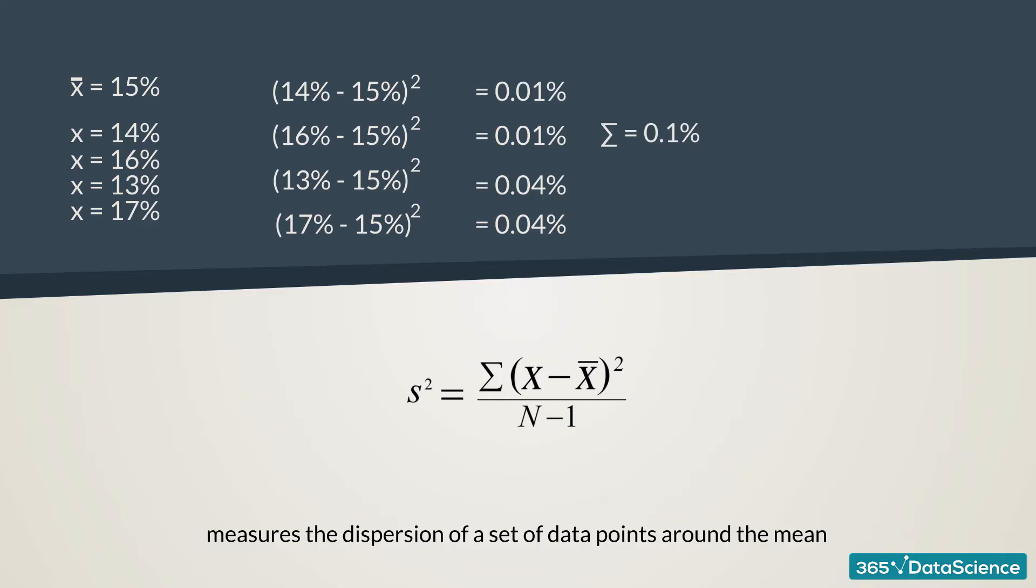Once we have the sum, we have to divide by the number of observations we've had minus 1. Here we had four observations, so we'll have 4 minus 1. I'll divide by 3. The variance is equal to 0.00033. If we take the square root of the variance, we'll obtain the standard deviation of this sample of observations, which is equal to 1.8%.